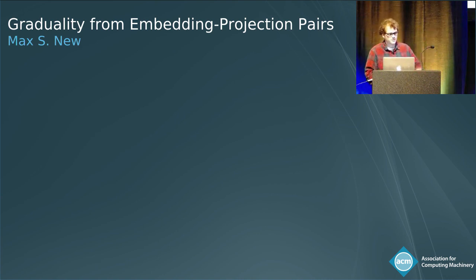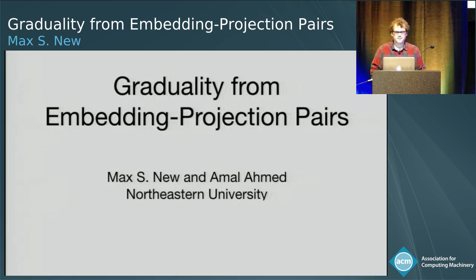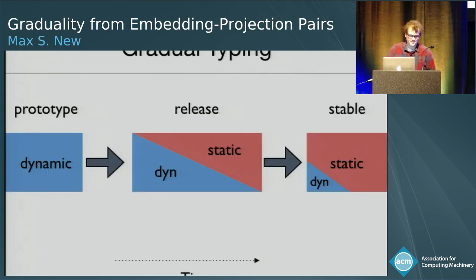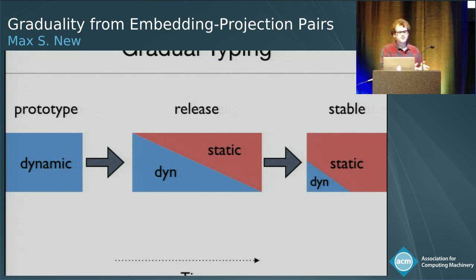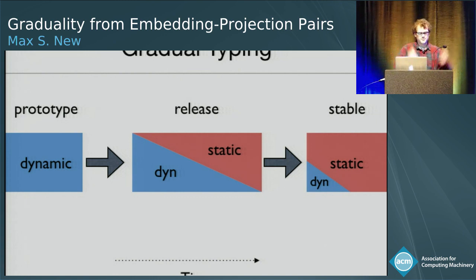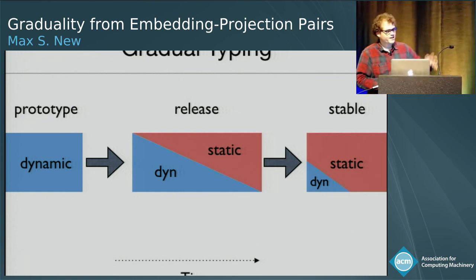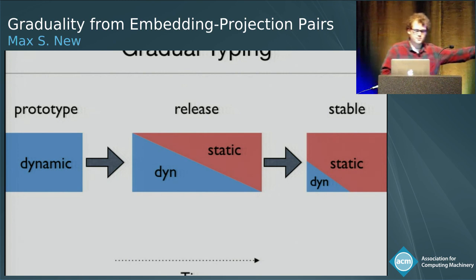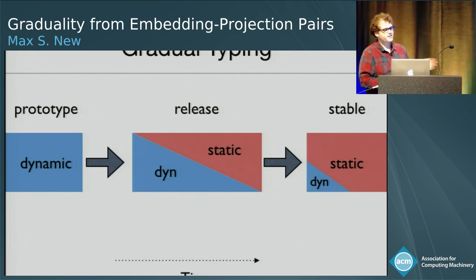This is joint work with my advisor Amal Ahmed. I am also talking about gradual typing, and the view we're taking here is that a gradually typed language lets you start out with a dynamically typed program. You can rapidly prototype it, and then gradually over time, as the program stabilizes and it's more important to rule out bugs, you can add static typing.